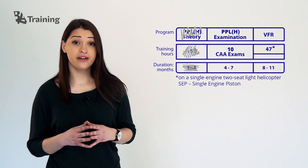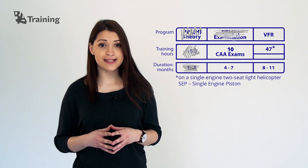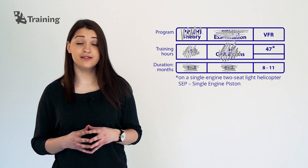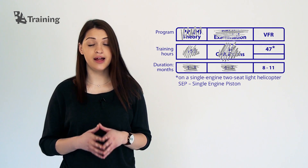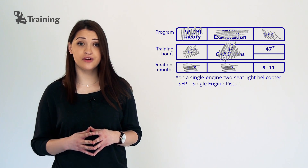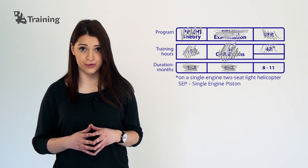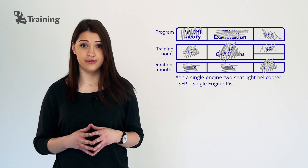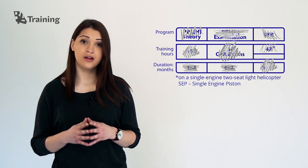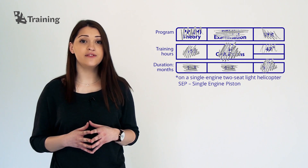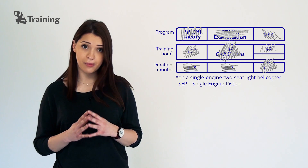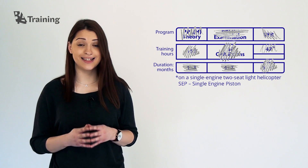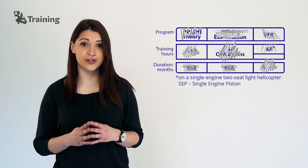After completing the theoretical part and successfully passing the exams at Civil Aviation Administration, the student is allowed to start flight training. The flight training consists of 47 hours of flight under visual flight rules. It is usually performed at Kiviskis or Kaunas aerodrome on a helicopter. Once the student successfully finishes both the theoretical and practical parts of the training, he attains the private pilot license for a helicopter and can safely operate a helicopter on his own.